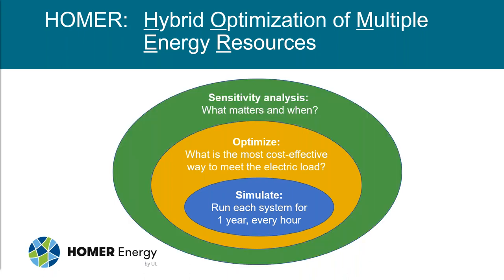Simulation tells you how one system operates, and then an optimization step simulates hundreds of different systems to find the least-cost system. HOMER also has an option to do sensitivity analyses, which allow you to look at the impact that changes in variables you don't have control over — such as fuel price or wind speed — have on your system design and costs.